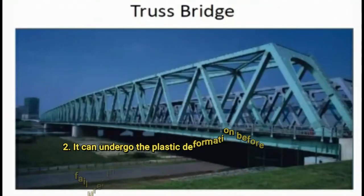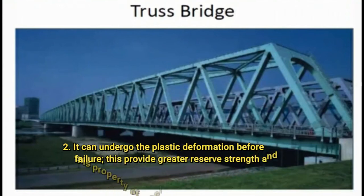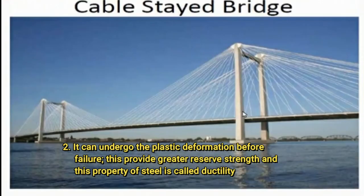The second point is steel can undergo plastic deformation before failure. This provides greater reserve strength, and this property of steel is called ductility.